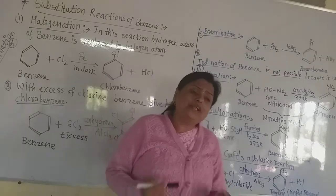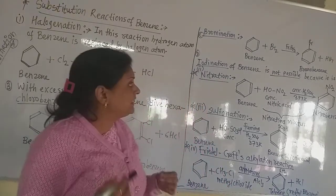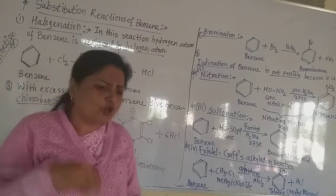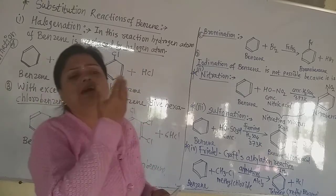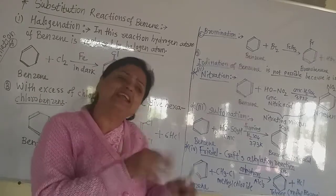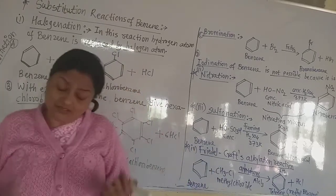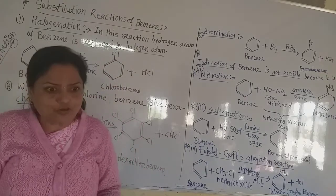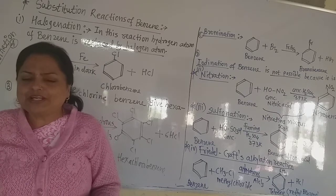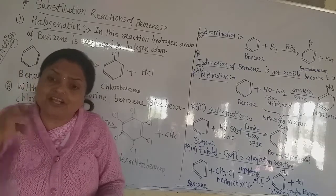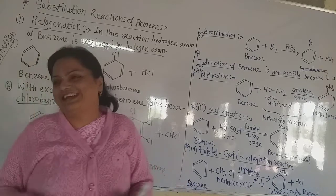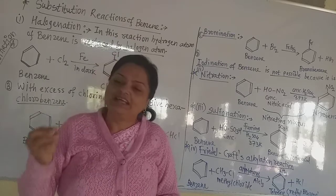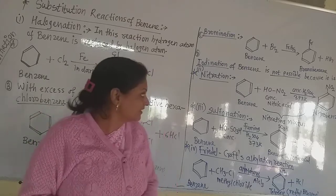However, iodination of benzene is not carried out or possible because it is a reversible reaction. As iodobenzene is formed, the reverse reaction takes place again and we obtain benzene back. In a few minutes or seconds, the iodobenzene changes back into benzene and iodine. So iodination of benzene is not possible due to the reversible reaction.